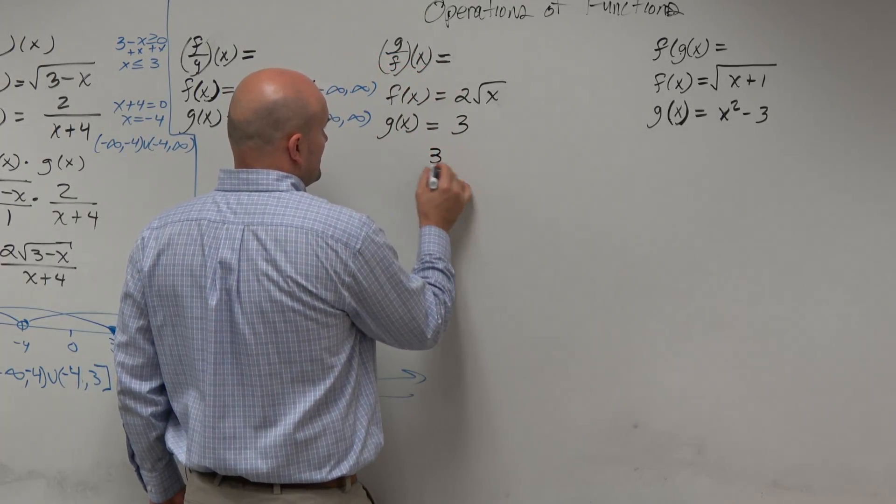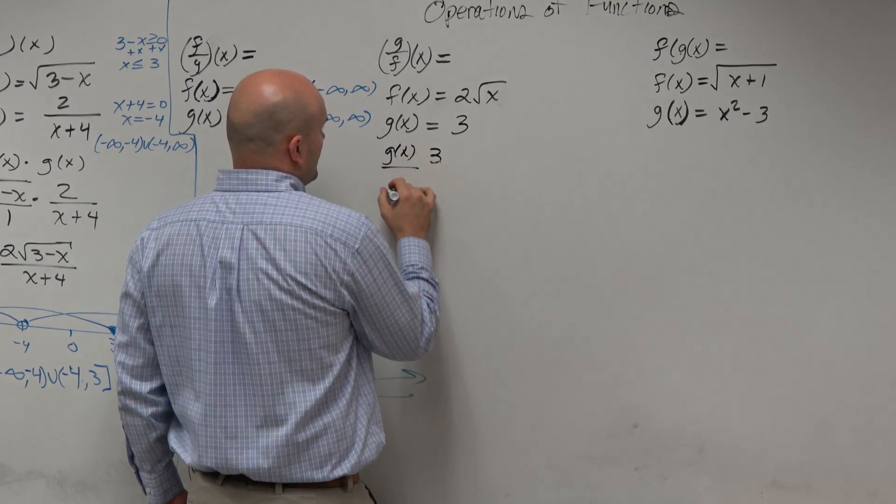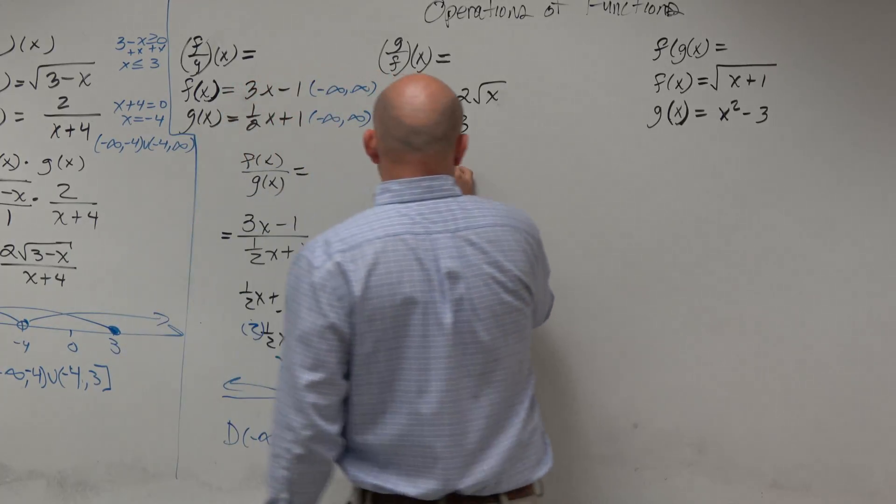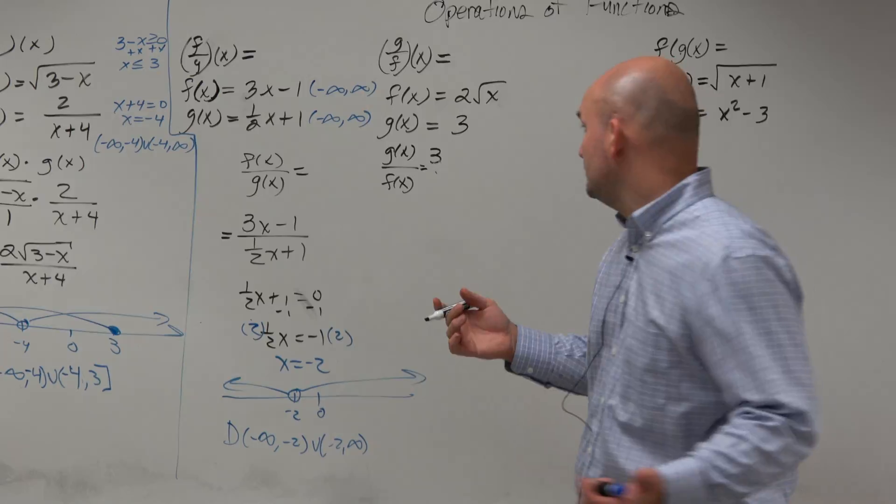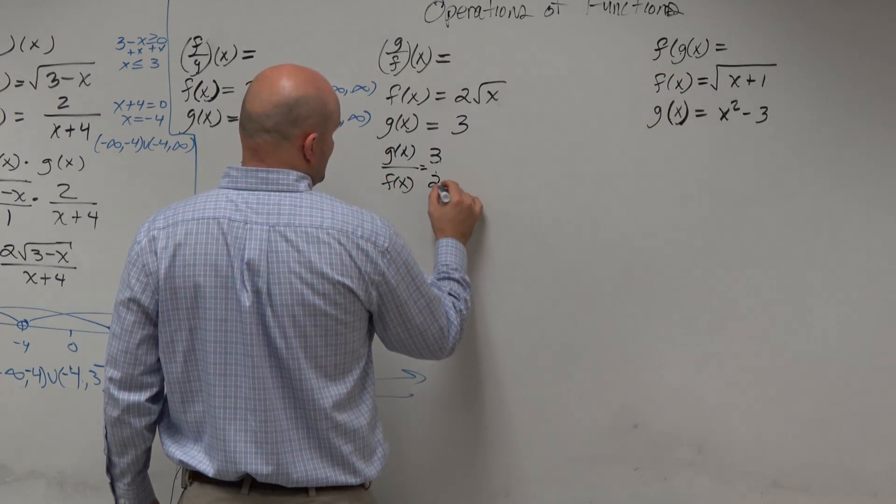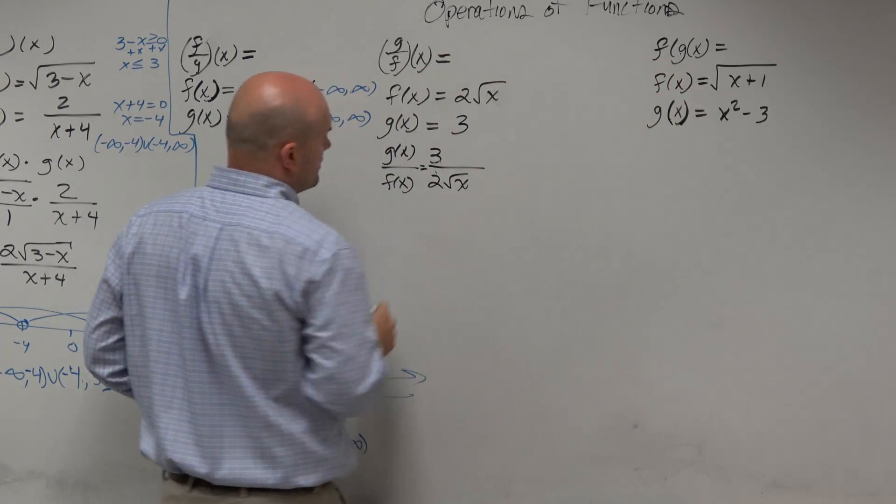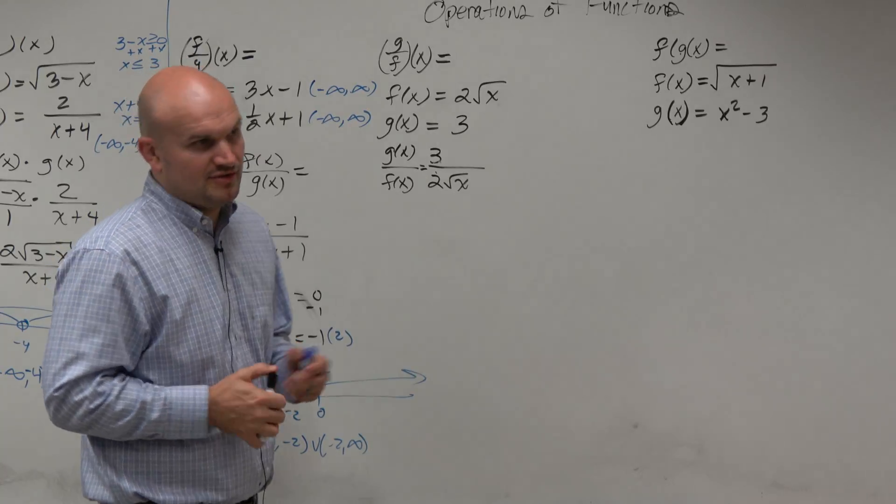You're just going to take g of x over f of x. Well, g of x is 3. That's a function, 3. And then f of x is 2 radical x. Okay, so division, done.